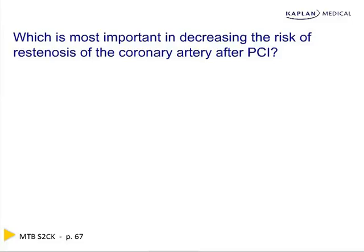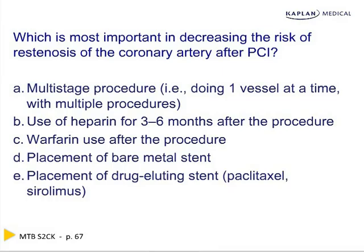The most important factor in decreasing re-stenosis risk after angioplasty is drug-eluting stents — coated with paclitaxel, a chemotherapy agent, or sirolimus (also called rapamycin). Sirolimus, pimecrolimus, and tacrolimus are T-cell inhibiting immunosuppressive medications also used to prevent organ transplant rejection. Re-stenosis occurs largely because the immune system causes proliferation of immune cells that clogs off the stent. Drug-eluting stents essentially act like topical immunosuppressants inside the coronary artery.